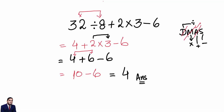This is a simple question, but if you do not follow the DMAS rule your answer will be wrong. You may solve 2 multiply 3 first, or 8 plus 2 first, and that is the reason why this question could be wrong if you do not follow the DMAS rule.